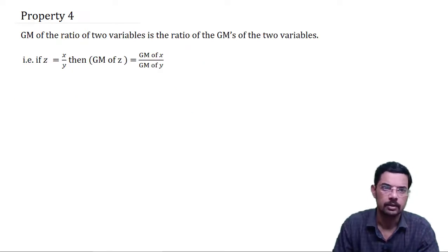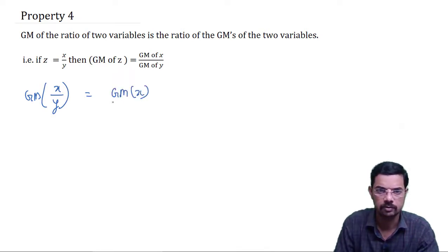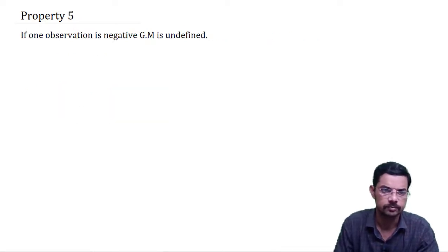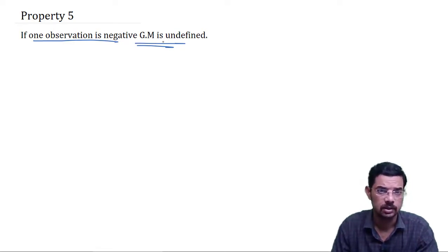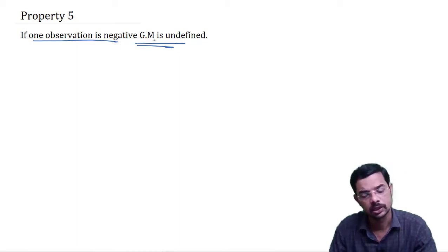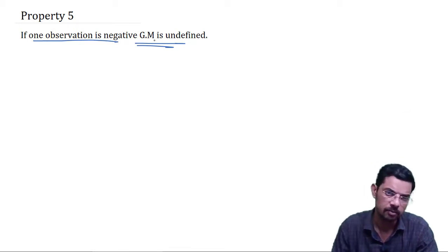Property 4 is the same thing for division: if we need to find GM of (x/y), that equals GM of x divided by GM of y. Property 5: if any one observation is negative, then GM is undefined, because the root of a negative number is not defined.